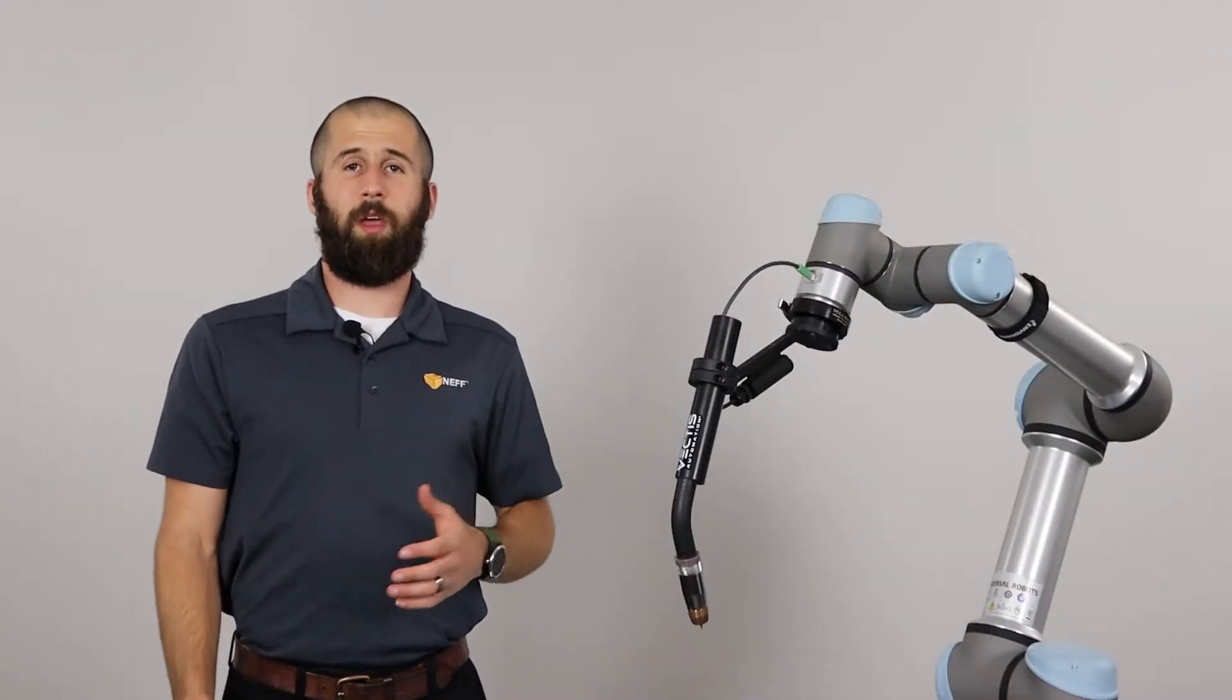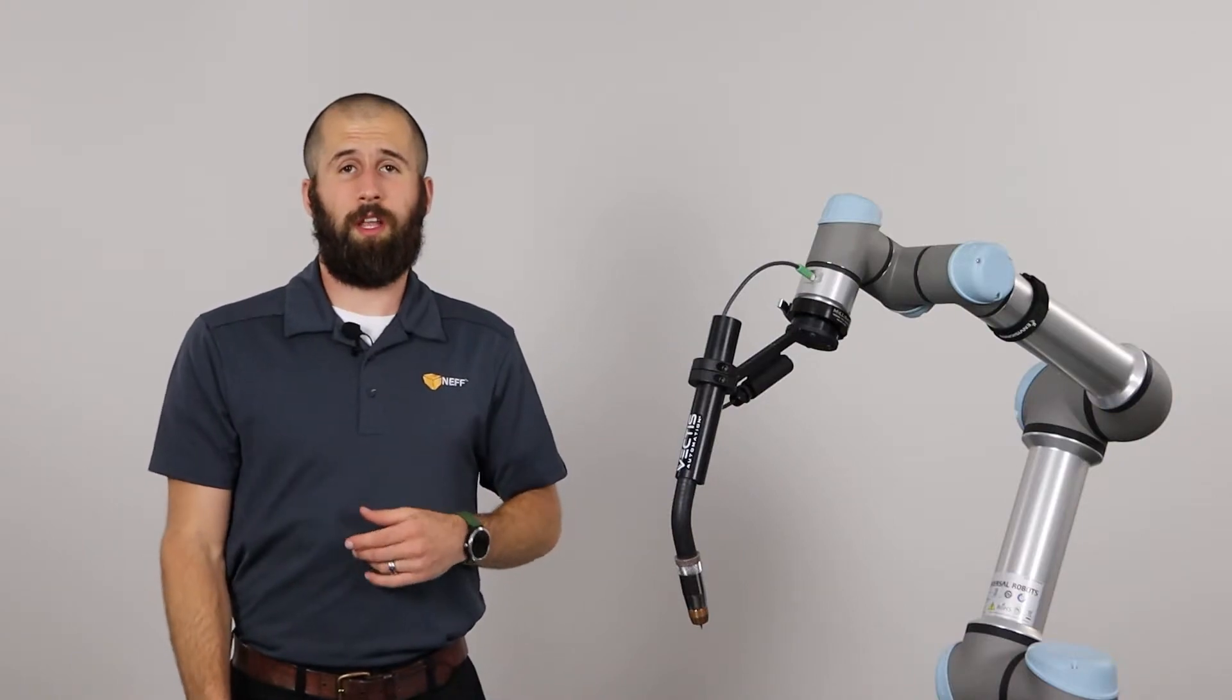So now let's take a look at what setting up your Universal Robots welder would look like on the pendant.